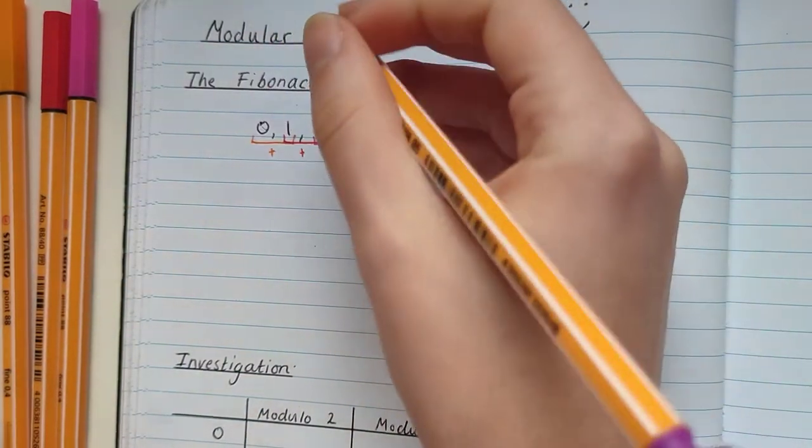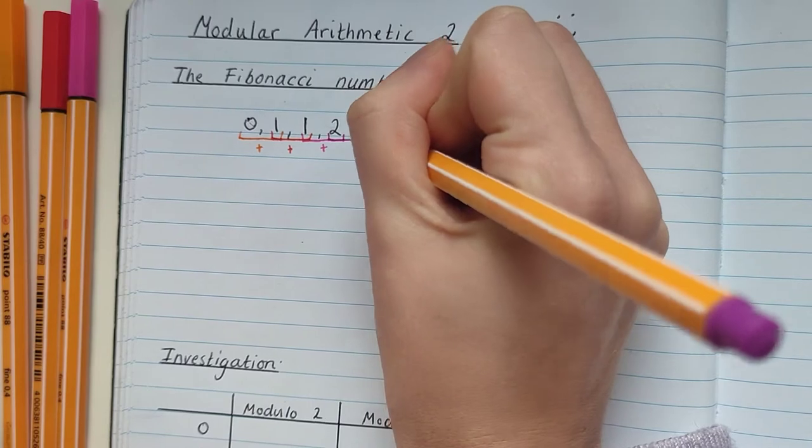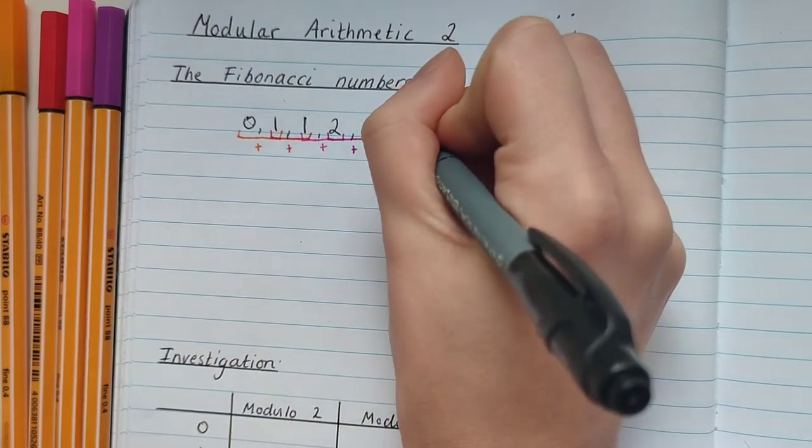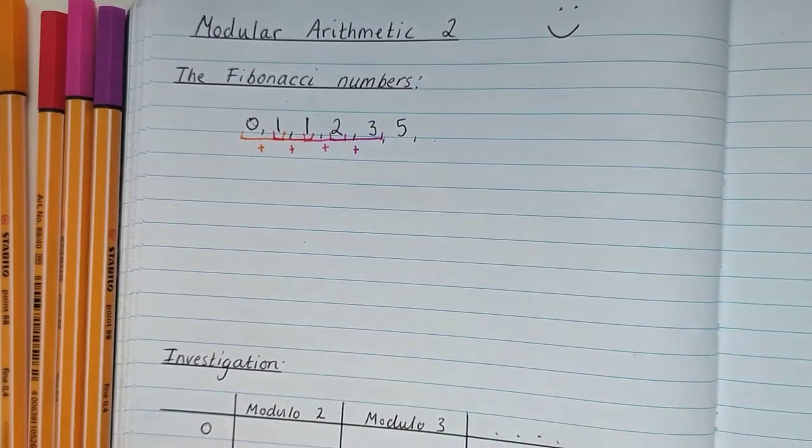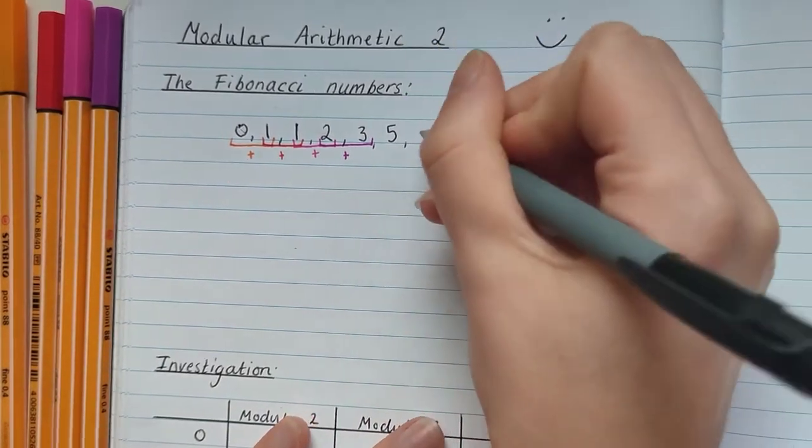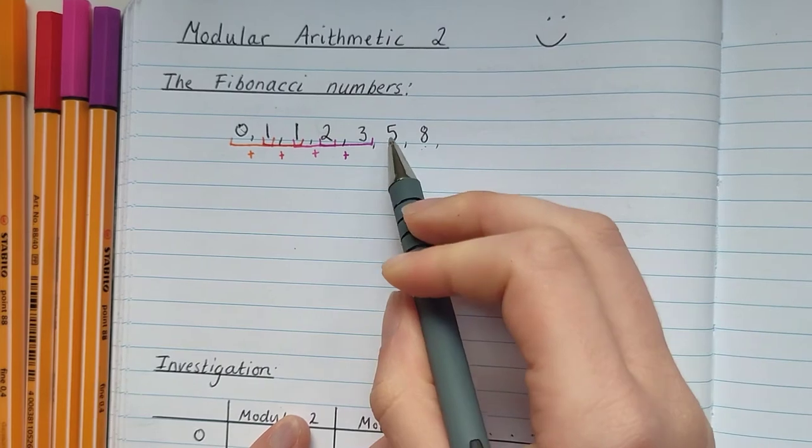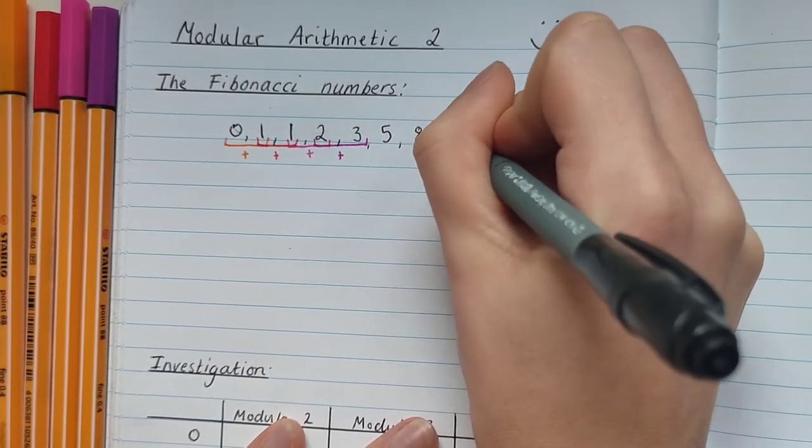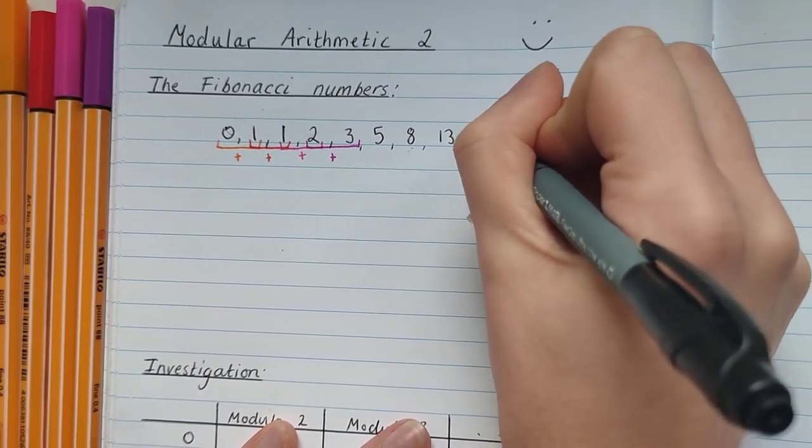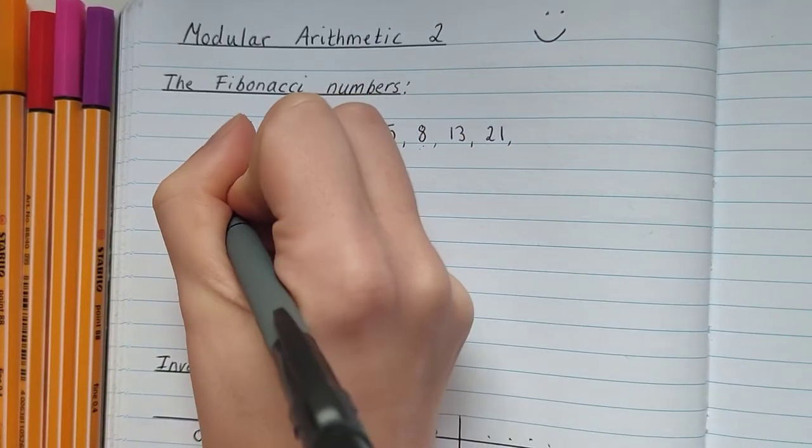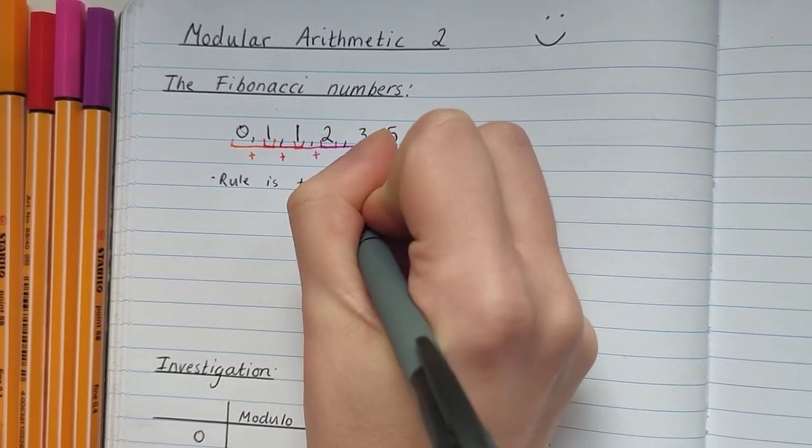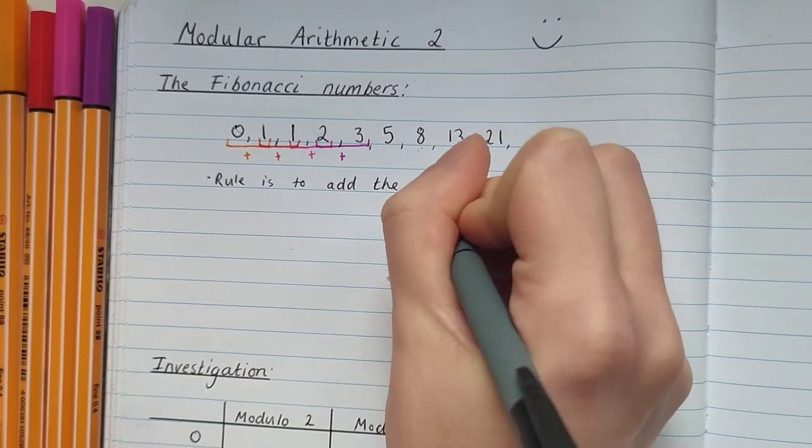To get the next number we need to add 2 and 3. 2 and 3 make 5, so 5 is the next number in our sequence. If we carry this on, we do 3 plus 5 to give us 8, then 5 plus 8 to give us 13, 8 plus 13 to give us 21. So the rule is to add the previous two numbers.